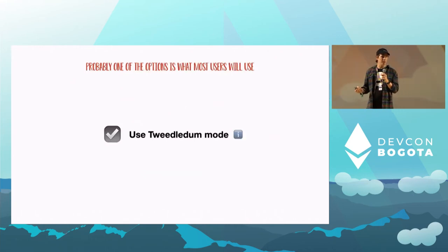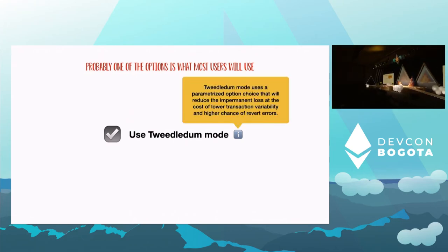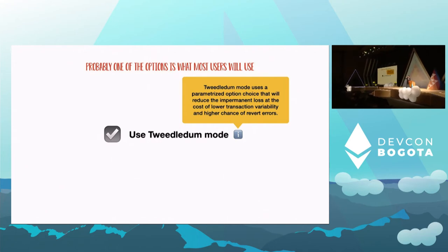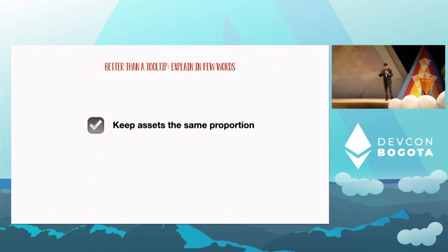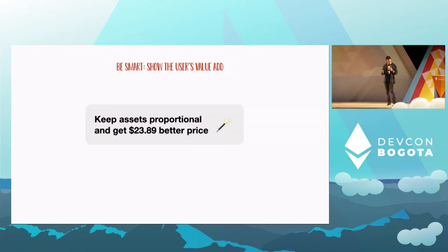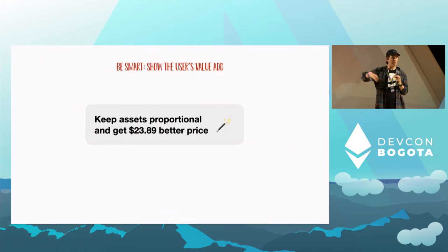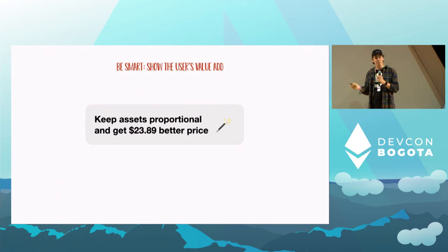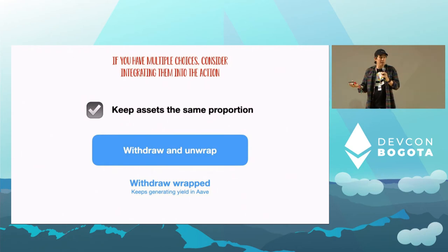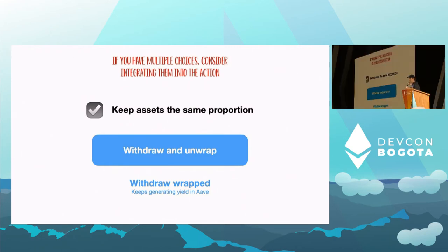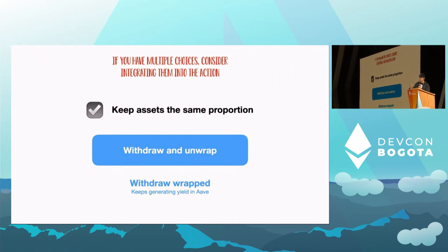A better way is not to make it a binary choice. Make a checkbox, but don't rely on a tooltip to explain it — your users do not read. You must understand your users and reduce whatever explanation there is to a five-word explanation. Better yet, instead of having users pick a choice upfront, just allow them to do what they want and add a small prompt afterward saying 'I see you're trying to do X — click this to save money.' Try to differentiate options: maybe one is a checkbox and the other is an action, or use two submit buttons where the default is visually emphasized.